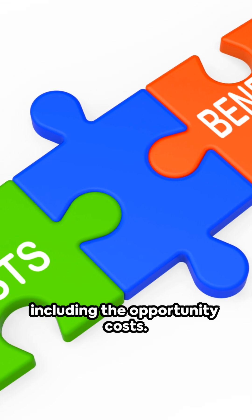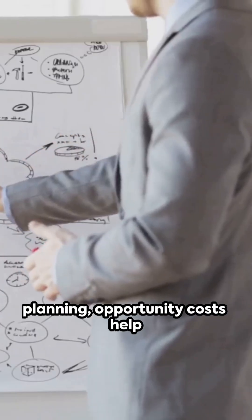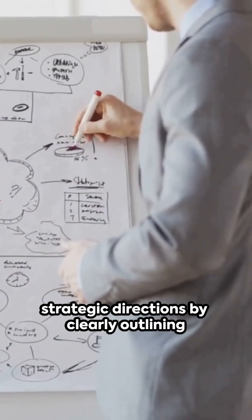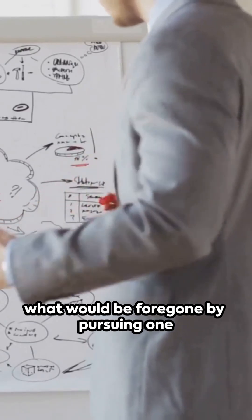Strategic planning: In strategic planning, opportunity costs help organizations decide between various strategic directions by clearly outlining what would be foregone by pursuing one option over another.